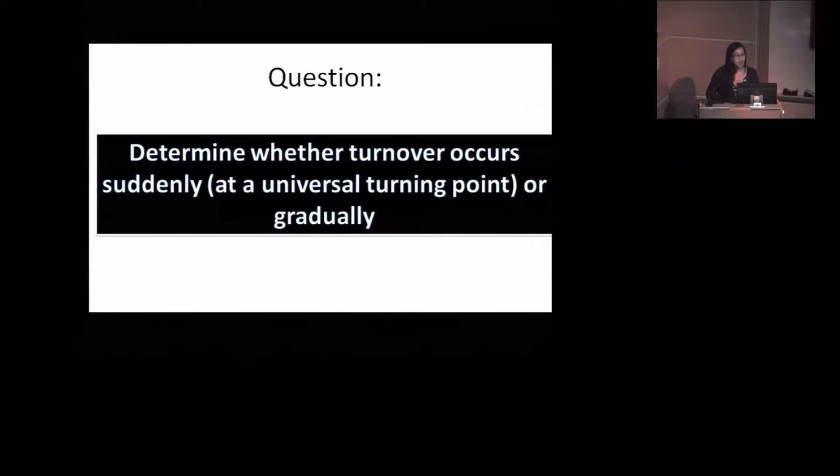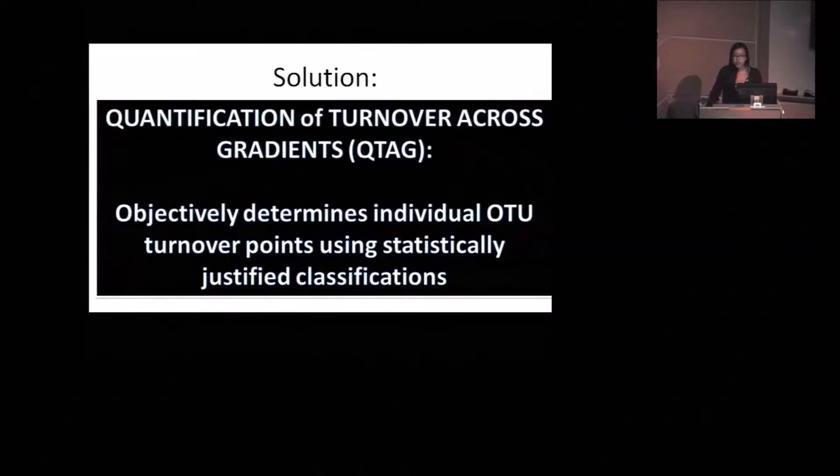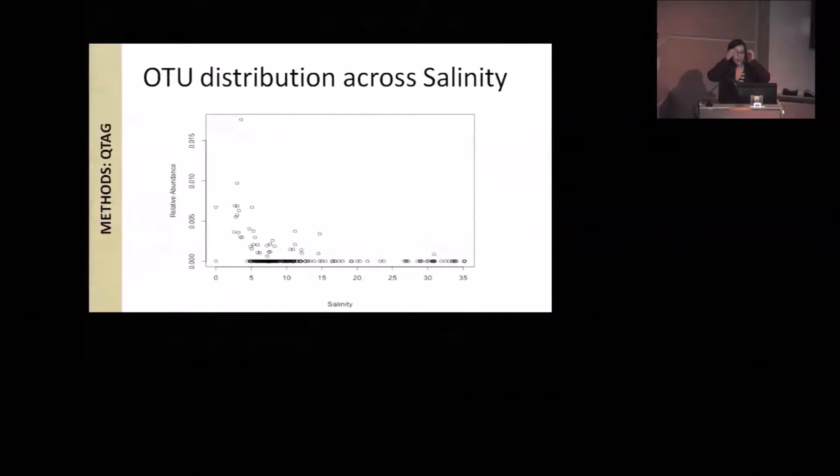The way we chose to address this was by writing a program called Quantification of Turnover Across Gradients, also QTAG. Basically what it does is it objectively determines individual OTU turnover points using statistically justified classifications, and I will explain exactly what I mean by that. An OTU, by the way, is an operational taxonomic unit. It's basically more or less a bacterial species. If you plot its abundance from a variety of samples along a salinity gradient, you can see how its distribution changes. For example, this one is very abundant in fresh water at salinity of about zero parts per thousand, and then as you go higher in salinity, it becomes less abundant.